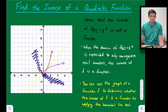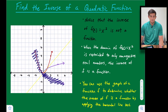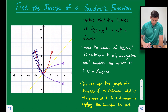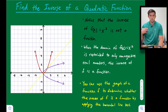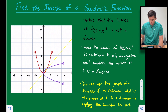We have to restrict the domain because if we restrict the domain of the original function, then the range of the inverse would also have that same restriction, which allows us to graph the inverse properly. You can also use the graph of function f to determine whether the inverse of f is a function by applying what we call the horizontal line test.